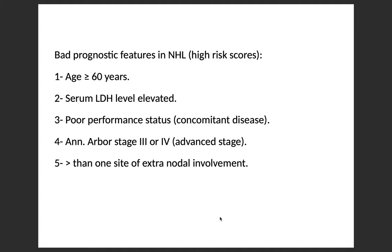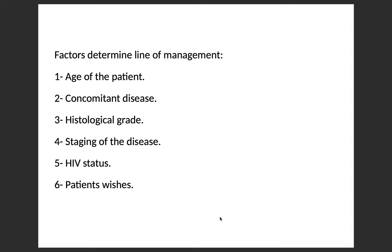The bad prognostic features in non-Hodgkin's lymphoma include age greater than or equal to 60 years, high level of LDH, poor performance status meaning the patient has a concomitant disease, Ann Arbor stage 3 or 4 indicating advanced disease, and more than one site of extranodal involvement. The factors that determine the line of management include the age of the patient, absence or presence of concomitant disease, histological grading, staging of the disease, HIV status, and the patient's wishes.